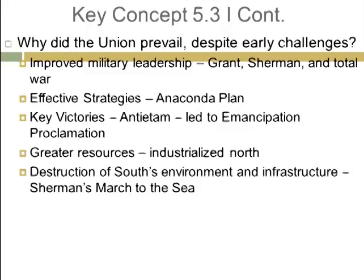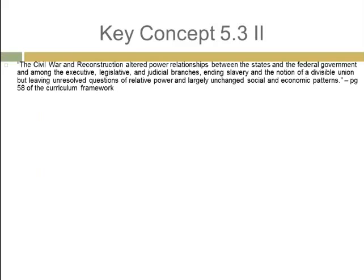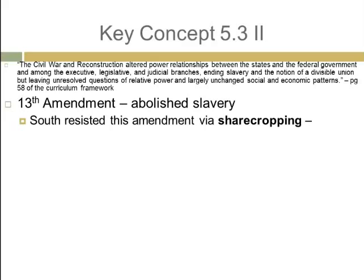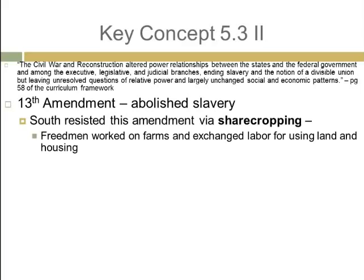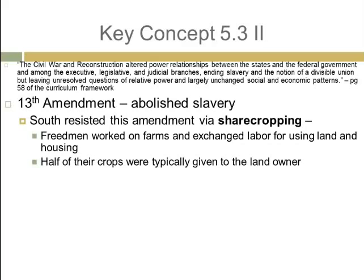Key Concept 5.3 Roman numeral 2 states that the Civil War and Reconstruction altered power relationships between the states and the federal government, and among the executive, legislative, and judicial branches, ending slavery and the notion of a divisible union, but leaving unresolved questions of relative power and largely unchanged social and economic patterns. The 13th Amendment abolished slavery, but the South resisted this via sharecropping — former slaves would work on farms, exchanging their labor for use of land and houses, essentially renting land from former plantation owners. Half of their crops were typically given to the landowner as payment. Sharecroppers had to borrow money to get started.